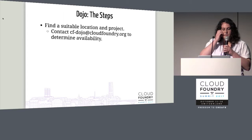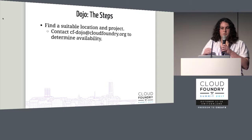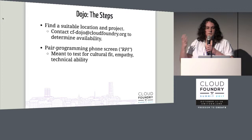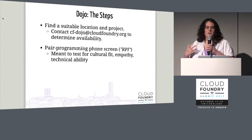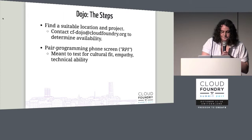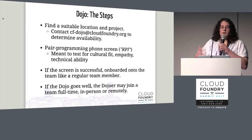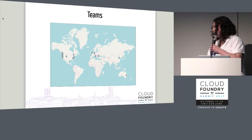The first steps to doing a dojo is to contact cfdojo@cloudfoundry.org to find space on a team, because you're joining as a real normal member. There are several dojo locations in the United States and two in Europe. After confirming availability, you do a pair programming phone screen to make sure you'd be a good fit for this TDD pairing environment. If that screen goes okay, you get onboarded onto the team like a normal team member. And if the dojo goes well, you can join a regular team either in-person or remote.